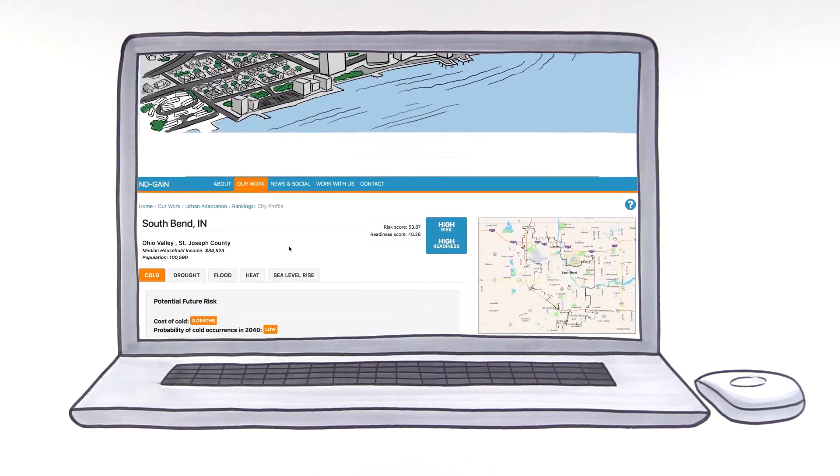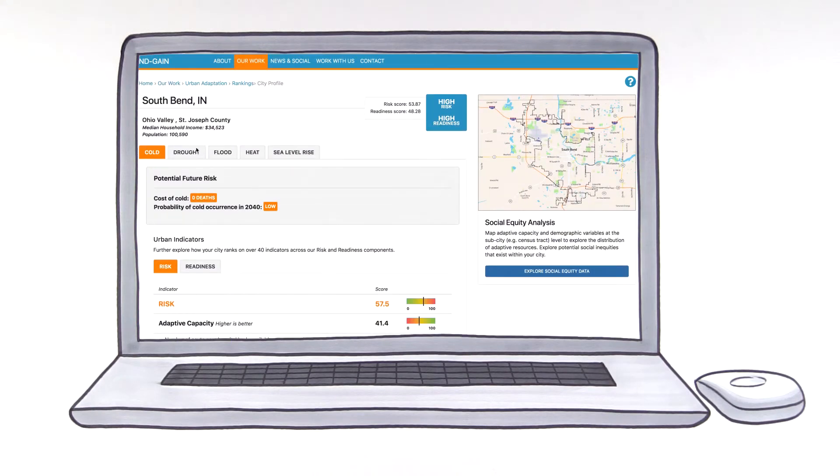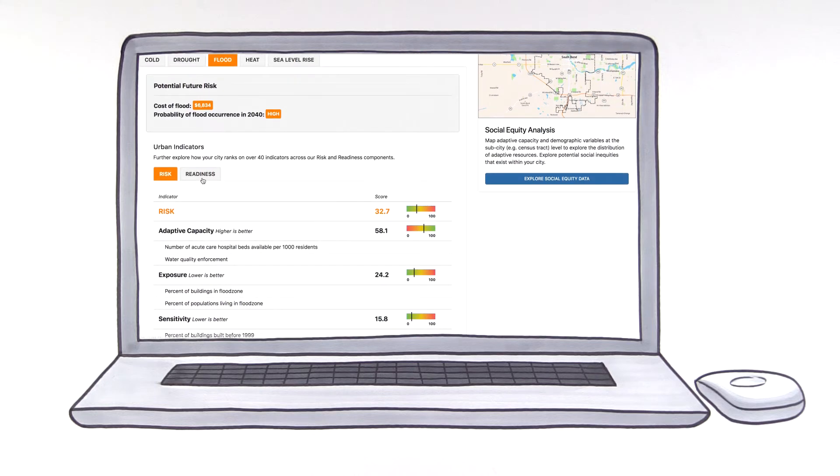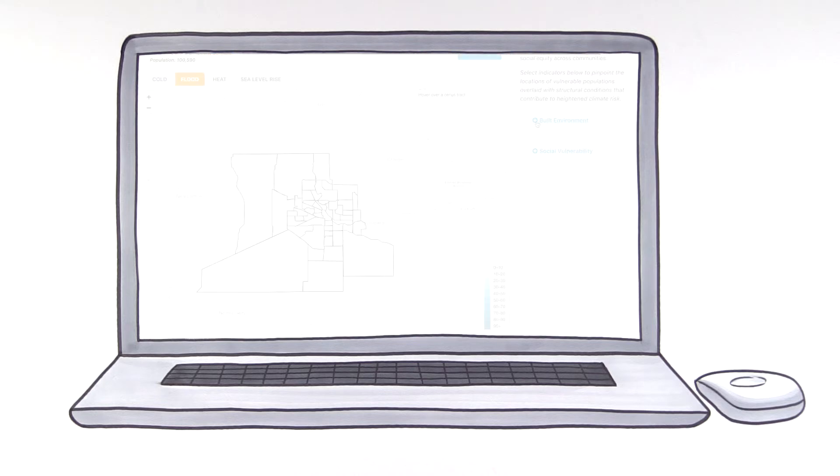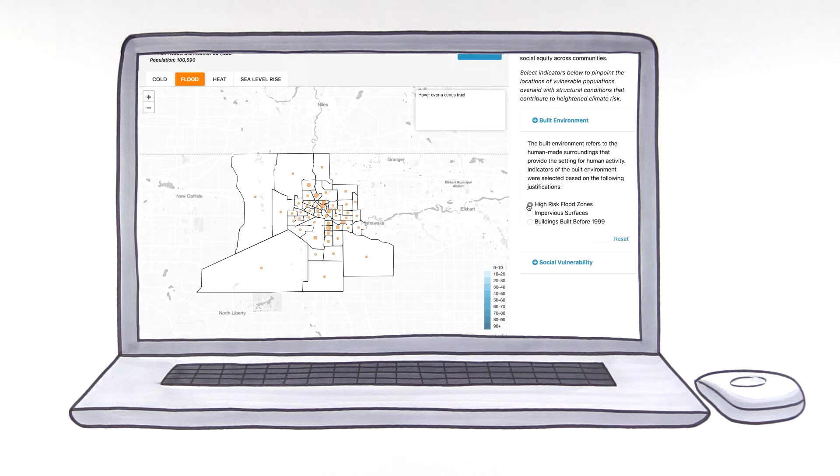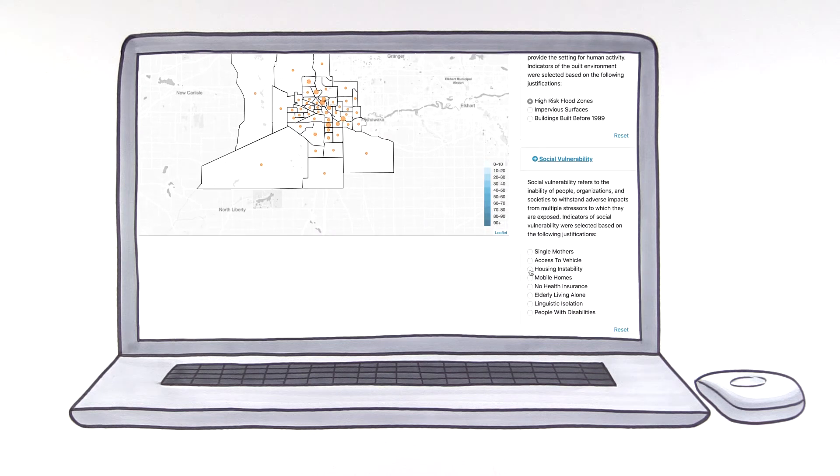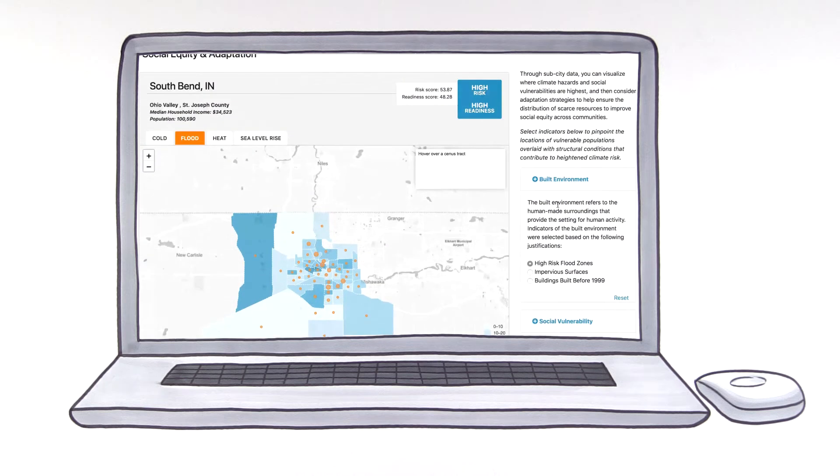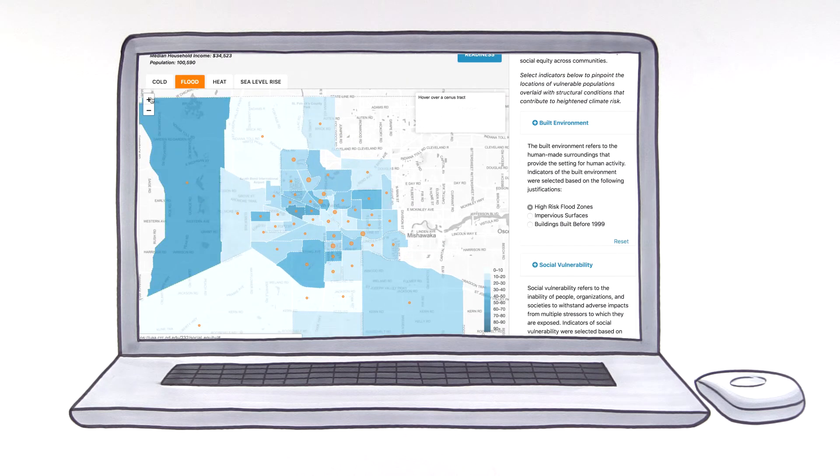For instance, say you learn of an opportunity to improve flood preparation in your city. With the UAA, you can view the cost of flooding and other hazards, as well as the probability of each in 2040. Then consider how choices could limit the city's vulnerability, in turn, reducing future costs.